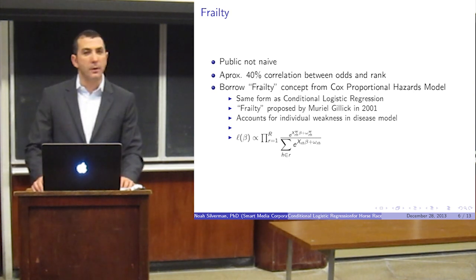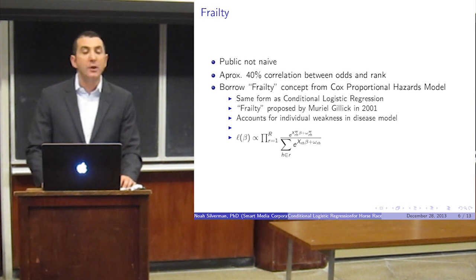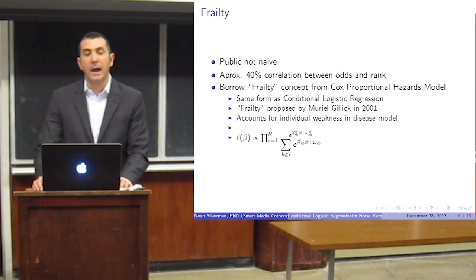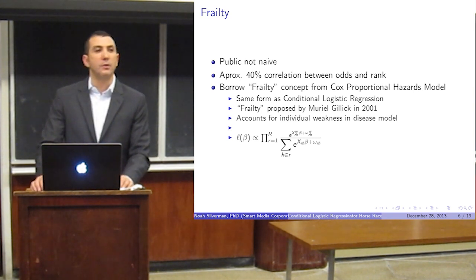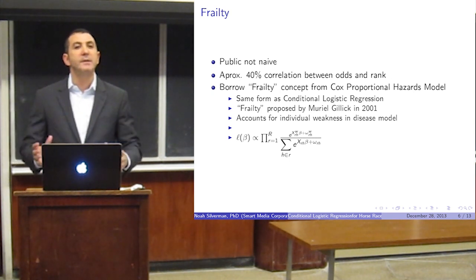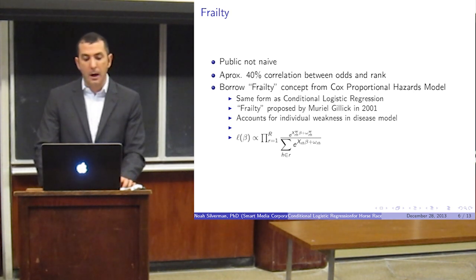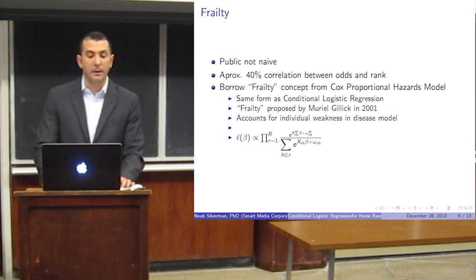Another innovation I introduced to this type of modeling is the concept of frailty. Interestingly, there's another model used in medicine called the Cox Proportional Hazards Model, which has to do with the probability of somebody dying or contracting a disease compared to the other survivors. It has the exact same mathematical formulation as a conditional logistic regression.